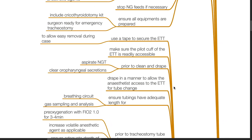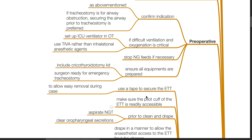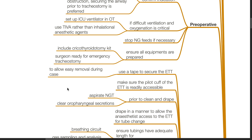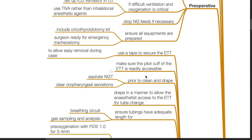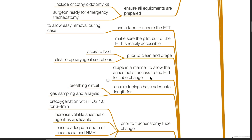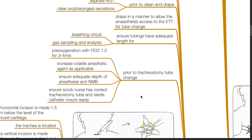Perioperative: use a tape to secure the endotracheal tube to allow easy removal during the case. Make sure the pilot cuff of the ETT is readily accessible. Prior to clean and drape, aspirate the nasogastric tube and clear oropharyngeal secretions. Drape in a manner to allow the anesthetist access to the endotracheal tube for tube change. Ensure tubings have adequate length for the breathing circuit and gas sampling and analysis. Prior to tracheostomy tube change, pre-oxygenate with 100% oxygen for 3-4 minutes. Increase volatile anesthetic agent as applicable. Ensure adequate depth of anesthesia and neuromuscular blockade, and that the scrub nurse has the correct tracheostomy tube and sterile catheter mount ready.